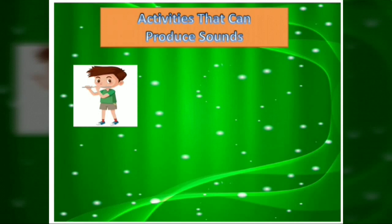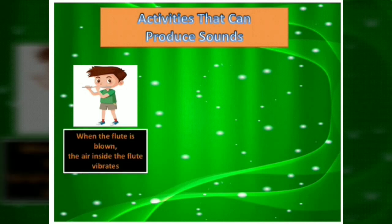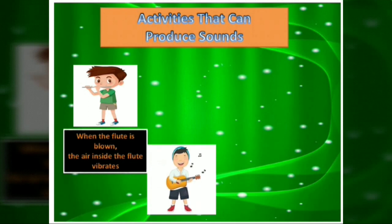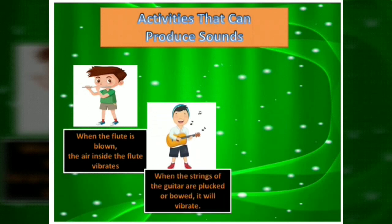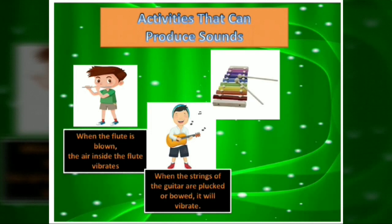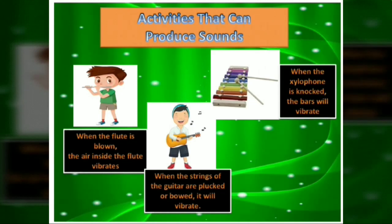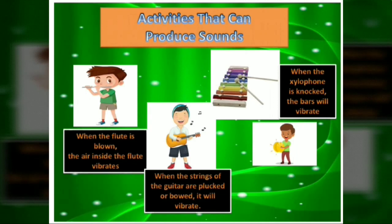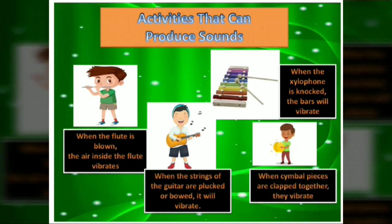This slide shows activities that can produce sound. When the flute is blown, the air inside the flute vibrates — this course produces sounds. Second, when the strings of the guitar are plucked or bowed, it will vibrate. When the xylophone is knocked, the bars will vibrate. When cymbal pieces are clapped together, they vibrate. These are examples of activities that can produce sounds.